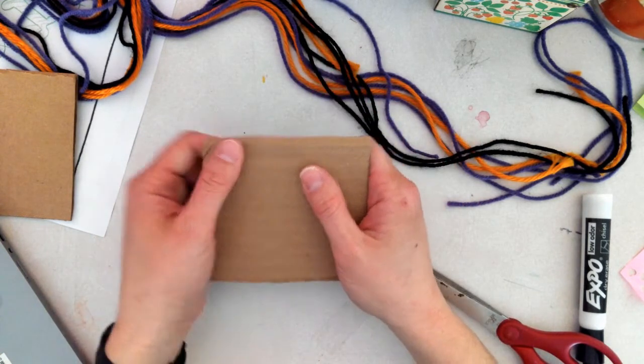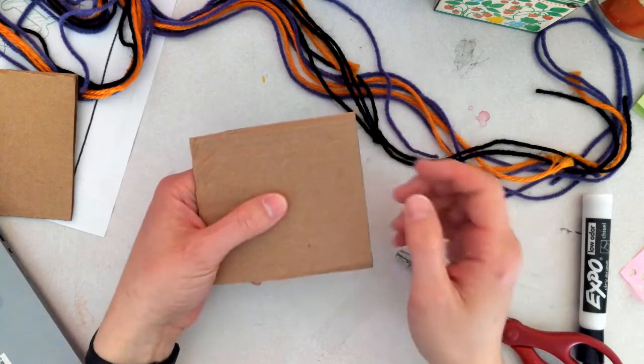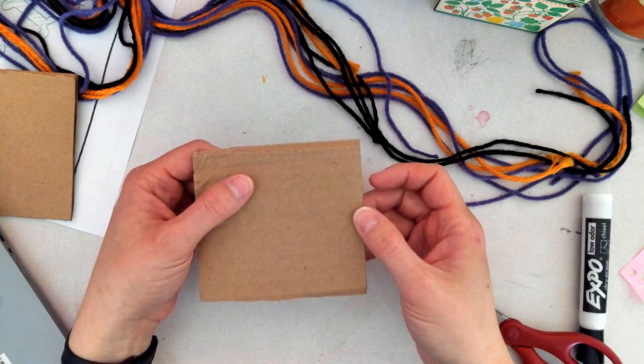First thing we're going to do is set up our sort of loom, and we're going to make this into an octagon.